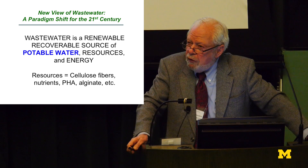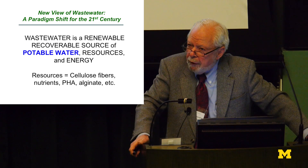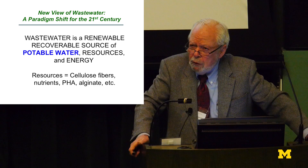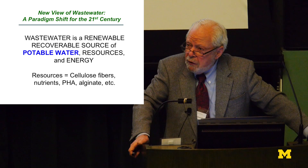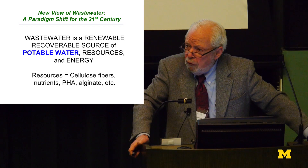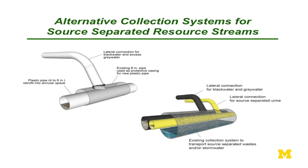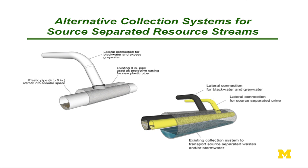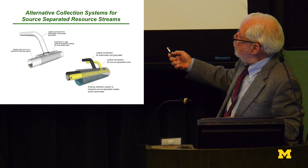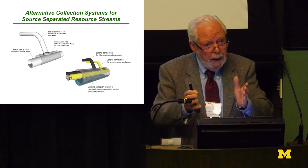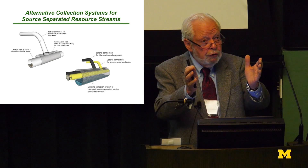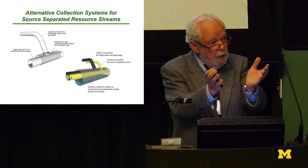On resources, it's interesting to think about the cellulose fiber in wastewater — huge amounts. Nutrients, PHA, and alginate represent a future for many treatment plants. If we talk about alternative collection systems, pipe within a pipe — we're already doing this in some locations. There's also talk of doing a dual system with urine separation and black water, and you could put these easily within an existing pipe, using the existing pipe as structure for the new system.